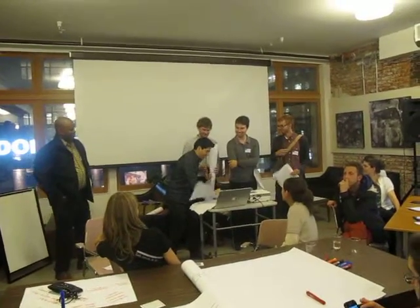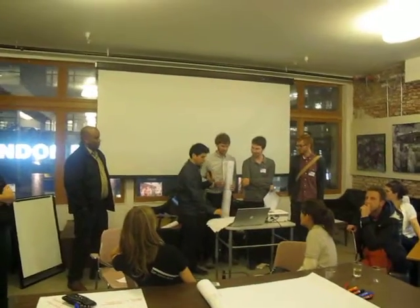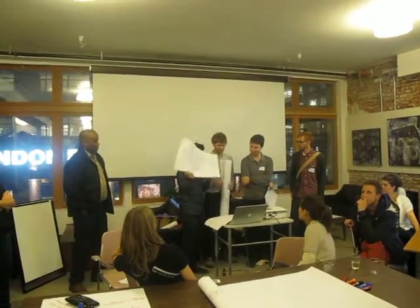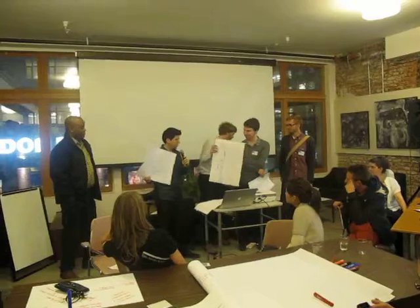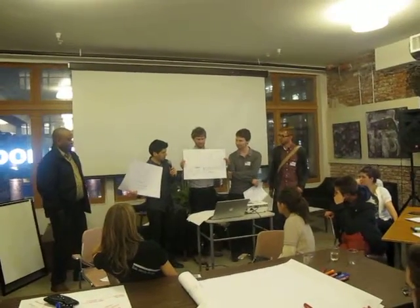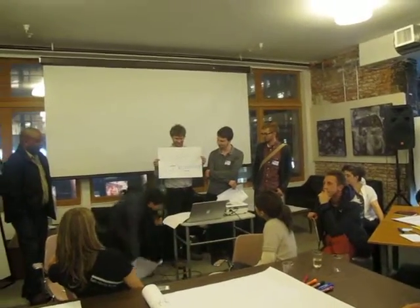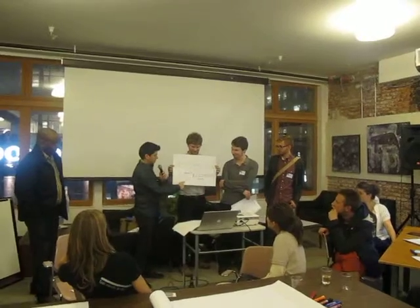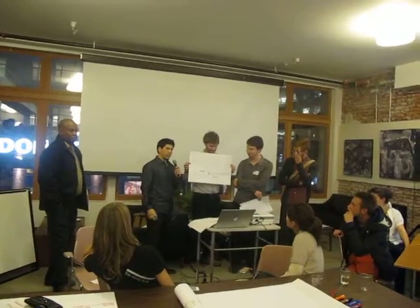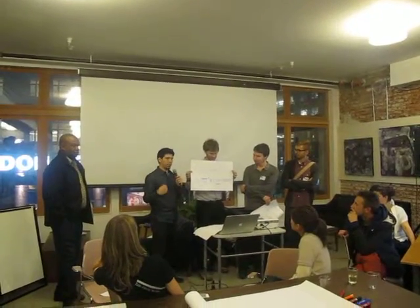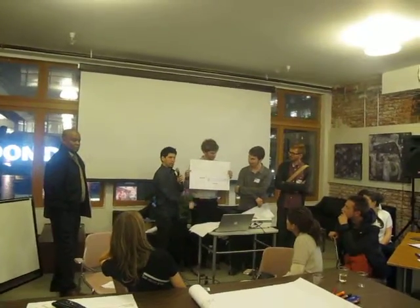After that we realized that in order to start running some of these experiments and projects, we were going to need money. That became a problem very quickly — how are we going to access money, and how are we going to do all of this free knowledge-based work and give it back to the general public? One idea was a Kickstarter-type model where we put out projects, develop them, get people to fund us, and use that money to execute the projects.